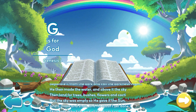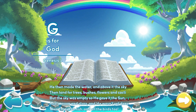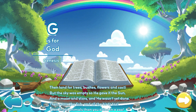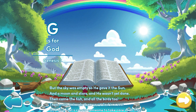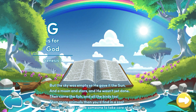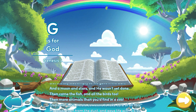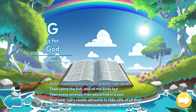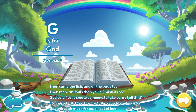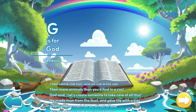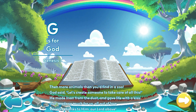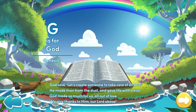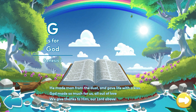But the sky was empty, so he gave it the sun, and a moon and stars, and he wasn't yet done. Then came the fish and all the birds too. Then more animals than you'd find in a zoo. God said, let's create something to take care of all this. He made man from the dust and gave life with a kiss.